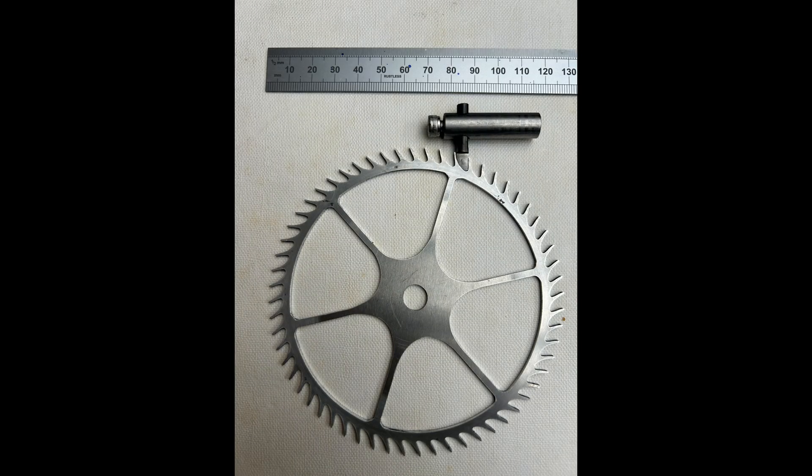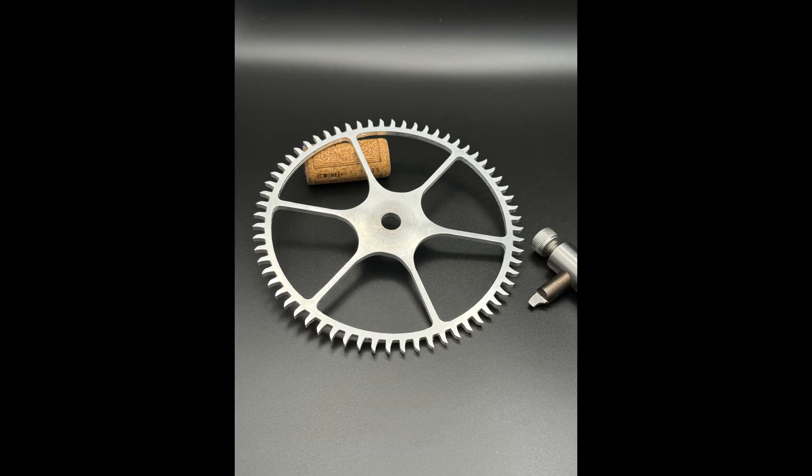So I started with the escape wheel. I had no idea how I was going to make this but in the end I decided to make my own single point cutters and just cut it in the normal way on the Myford lathe with a dividing head and this is the remontoir wheel which also has its own single point cutter.